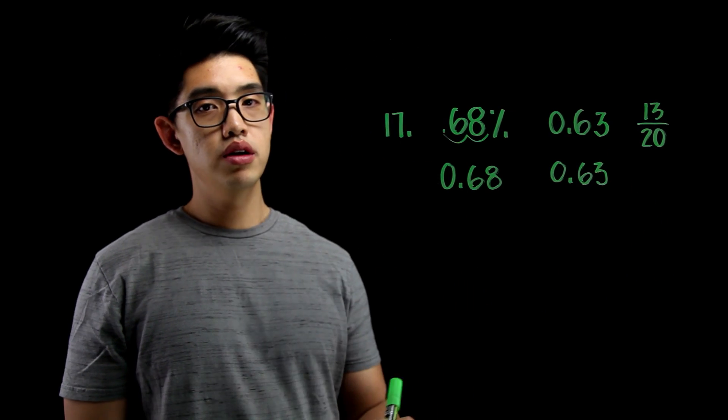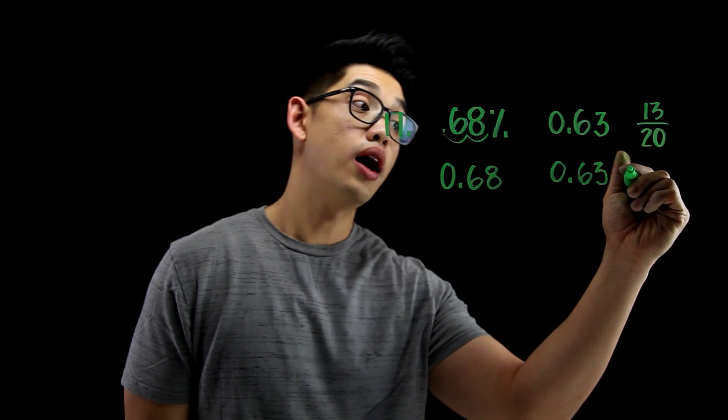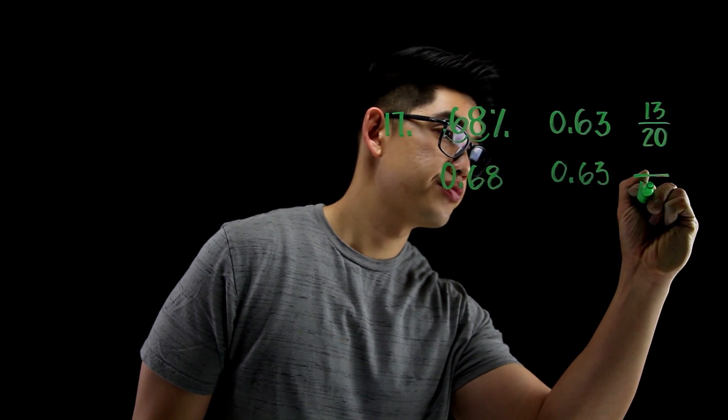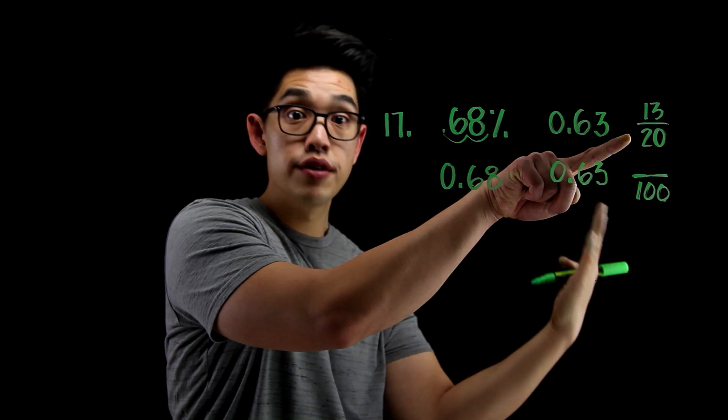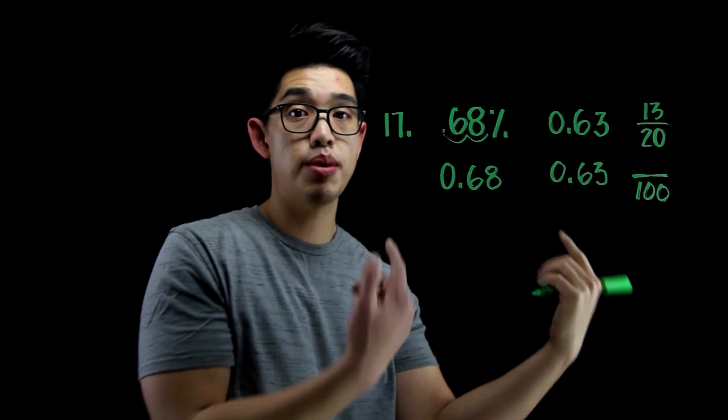And then 13 over 20. Let's set the denominator into 100. So, 20 became 100. I'm trying to figure out equivalent fractions, equivalent ratios. 20 became 100 because you multiply by 5.